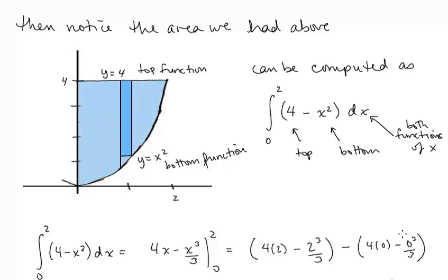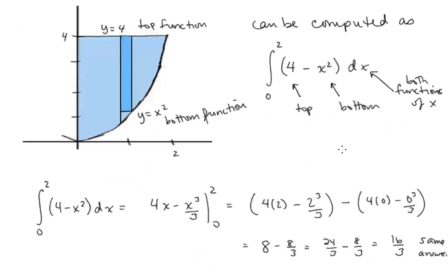The area we just found using horizontal rectangles and integrating with respect to y can also be found by integrating with respect to x — top function minus bottom function. Our top function is y equals 4 and our bottom function is y equals x squared, with bounds on x from 0 to 2. So we have the integral from 0 to 2 of 4 minus x squared, and integrating gives us the same answer of 16 thirds.